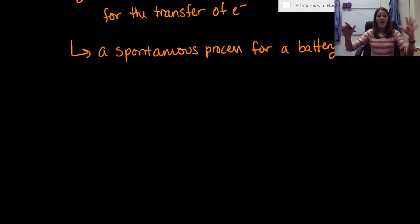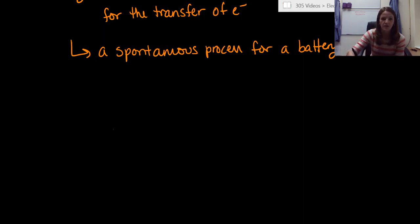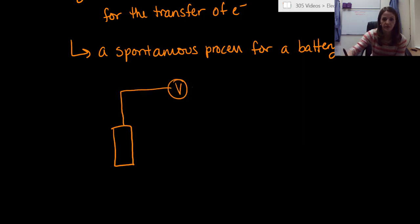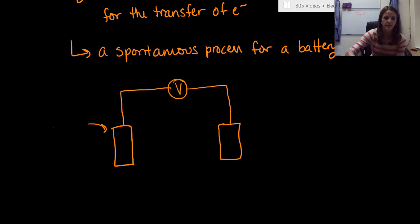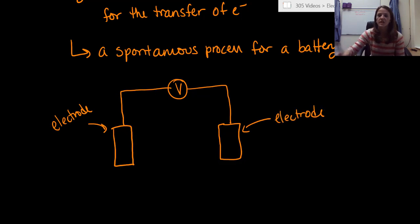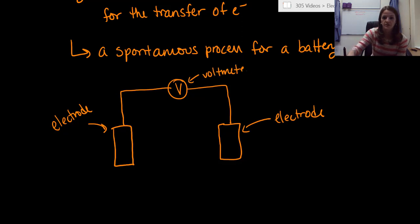Now I'm going to draw this out. Starting with an electrode on the left side, bringing it up and attaching it to a voltmeter, then bringing it down and attaching it to an electrode on the right side. Both are electrodes — think chunk of metal — and the V is your voltmeter.